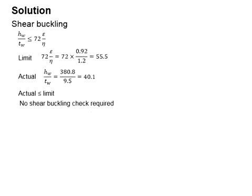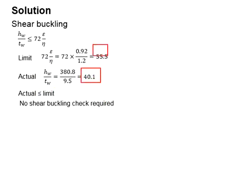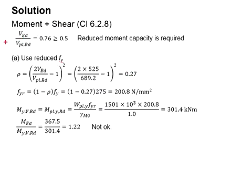Next, check for shear buckling. The ratio Hw/Tw must be less than 72ε/η. The limit is calculated as 55.5 and the ratio Hw/Tw is 40.1. Since the actual ratio is less than the limit, no shear buckling check is required. However, as the shear load is more than 50% of the shear capacity, shear is expected to affect the moment-resisting capacity.